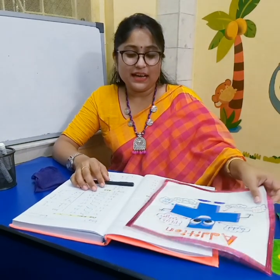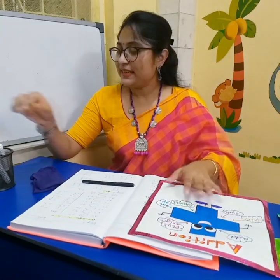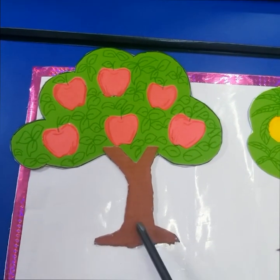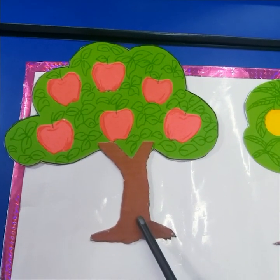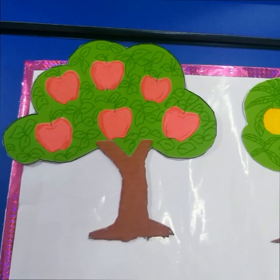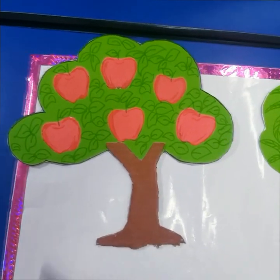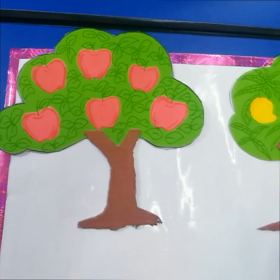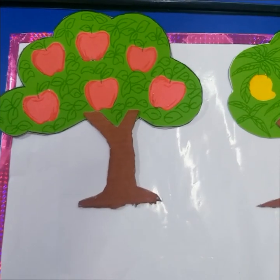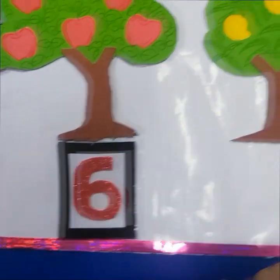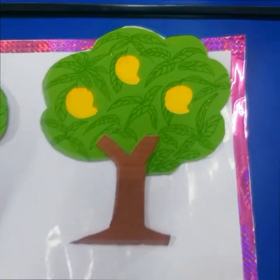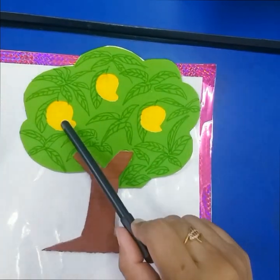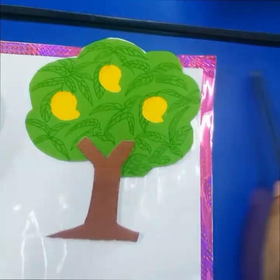Now let's do an example. This is an apple tree. Let's count how many apples are there: one, two, three, four, five, six. Six apples. This is a mango tree. Let's count how many mangoes are there: one, two, three.